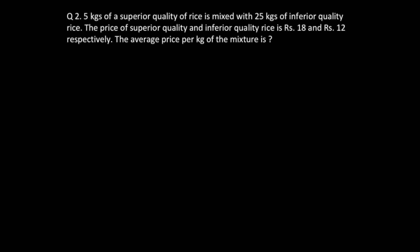In second question we are given 5 kg of superior quality rice mixed with 25 kg of inferior quality rice. The price of superior quality and inferior quality are rupees 18 and rupees 12 per kg respectively. The average price per kg of the mixture is how much?